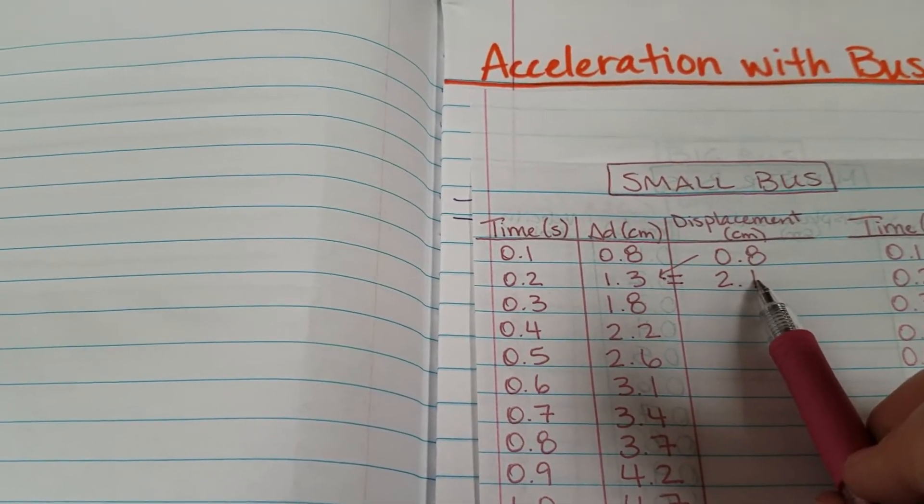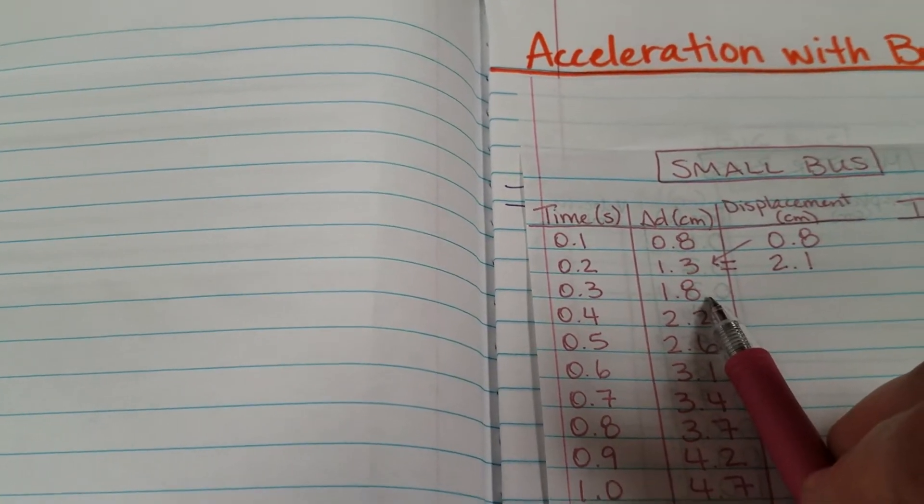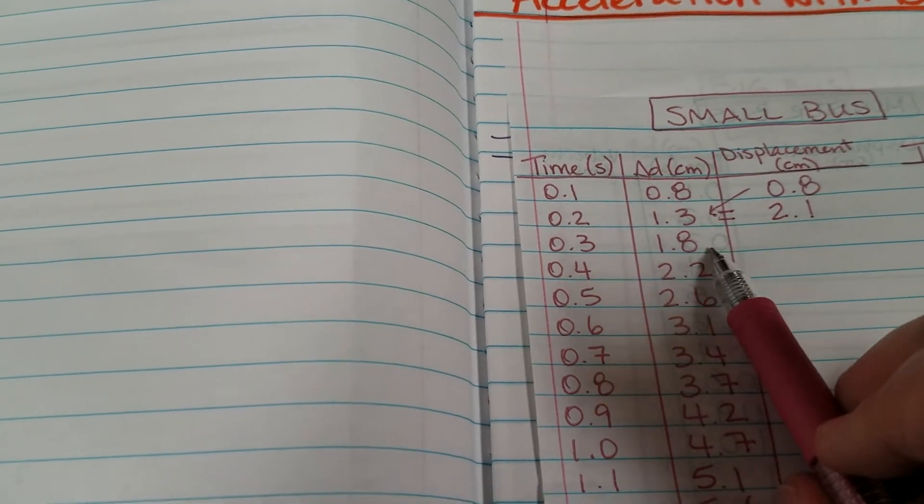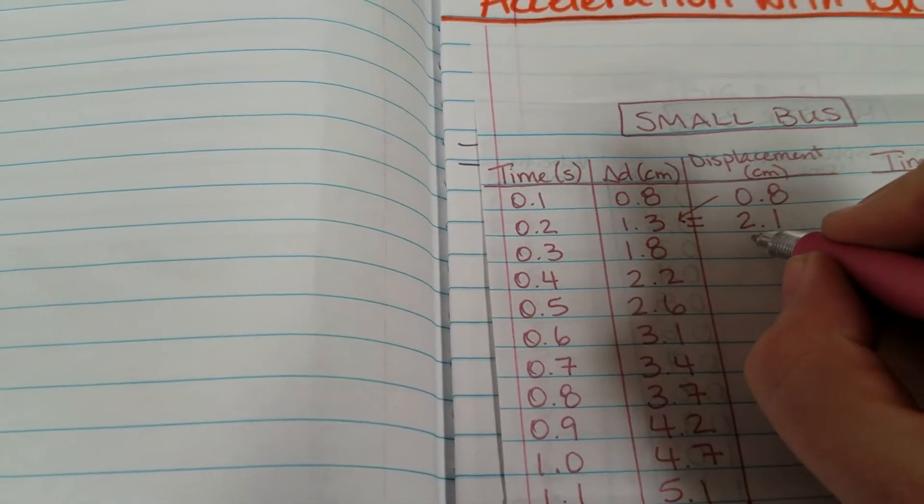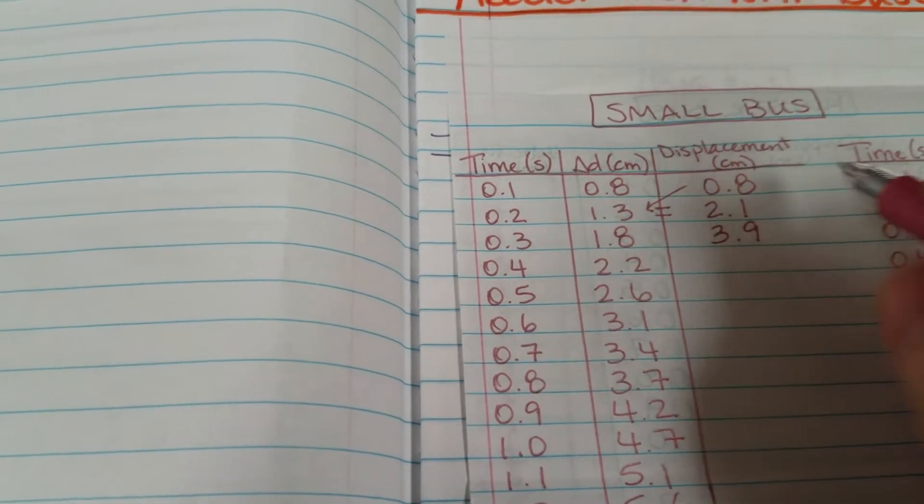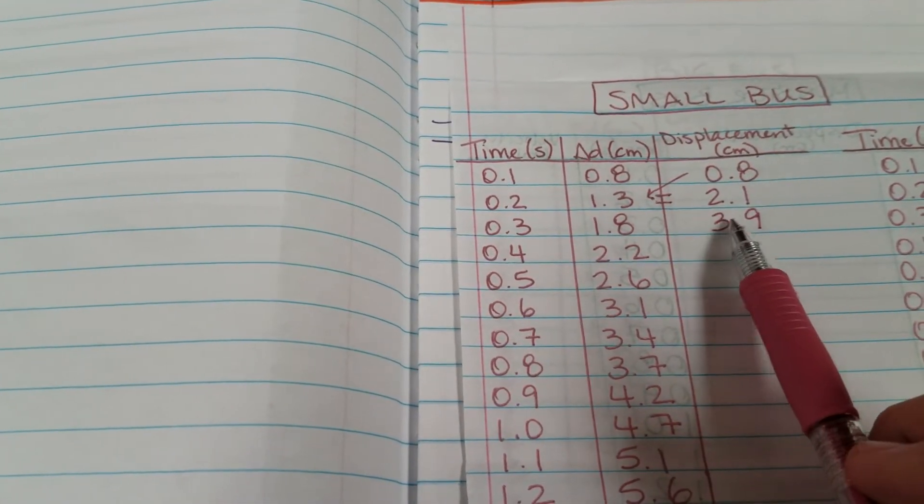Now I'm going to take this number and add it to the next one. 2.1 plus 1.8 equals 3.9 and you just keep doing that all the way down.